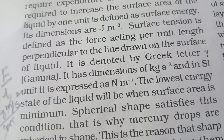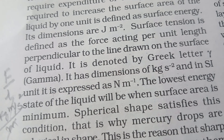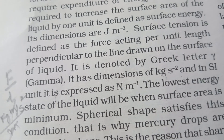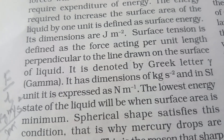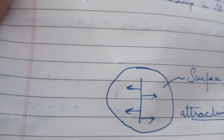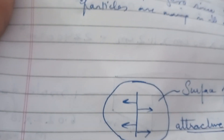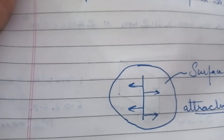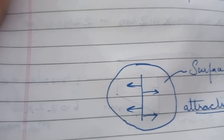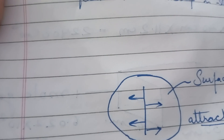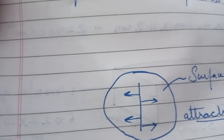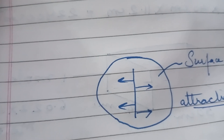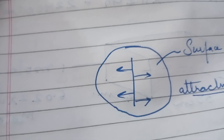Surface tension is defined as the force acting per unit length perpendicular to the line drawn on the surface of the liquid. If you look at the surface of the liquid, you draw a line on that surface, and the force acting perpendicular to that line per unit length is the surface tension.